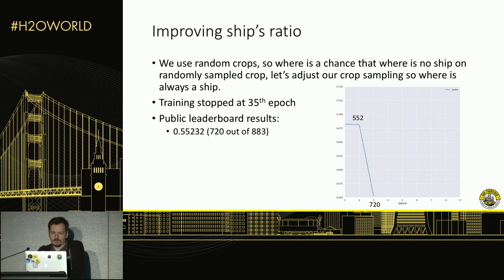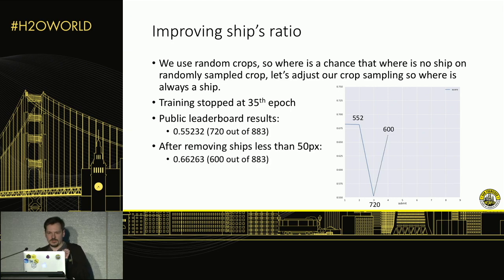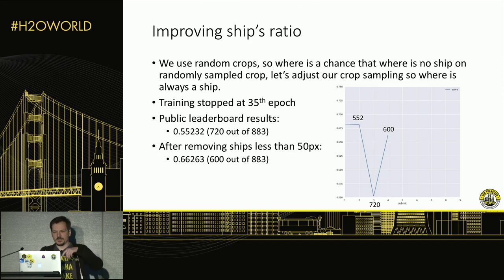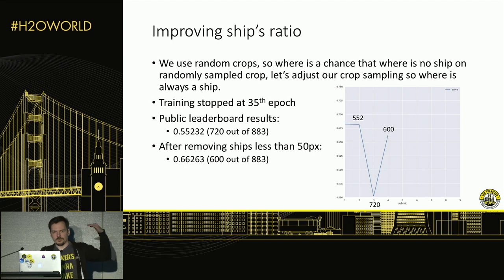So what did we do wrong? Looking at our logs, we found a significant difference between train loss and test loss — the model was showing a sign of underfitting. The training was stopped way before the model actually learned a lot about the data. So we decided to change the training schema.